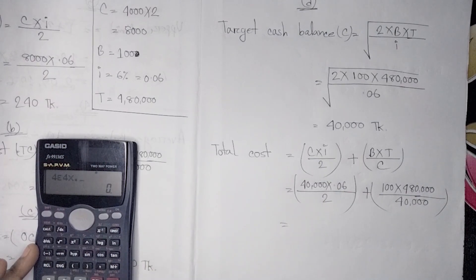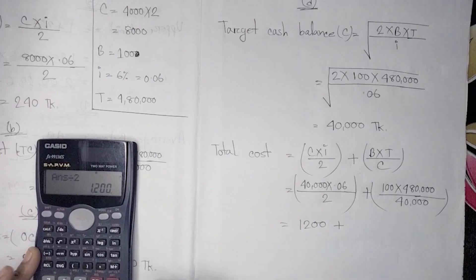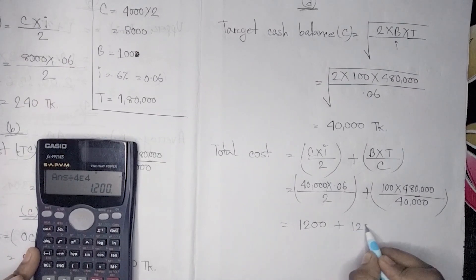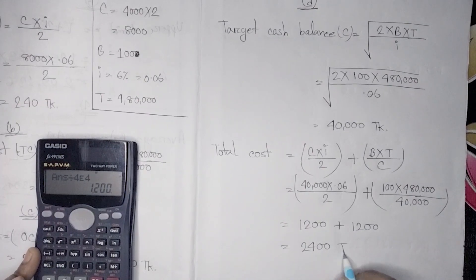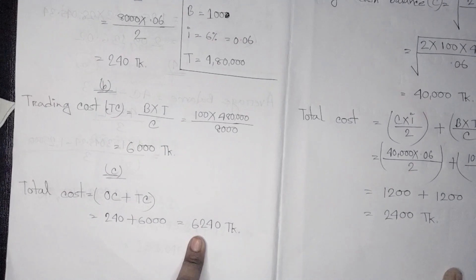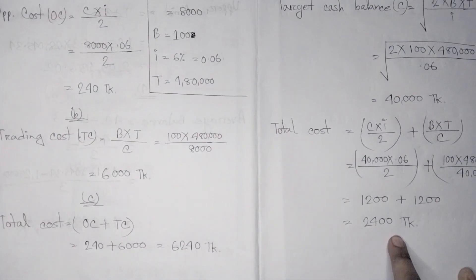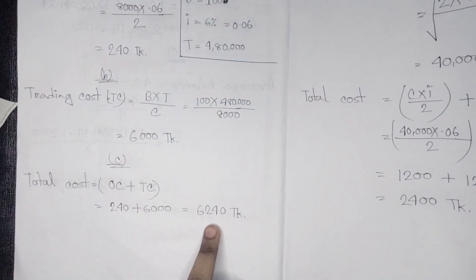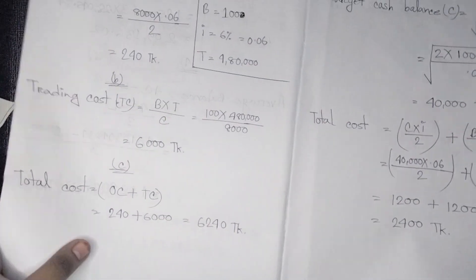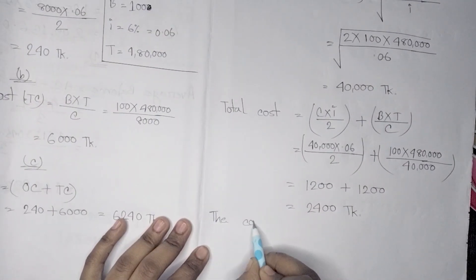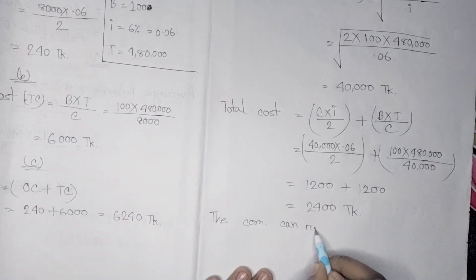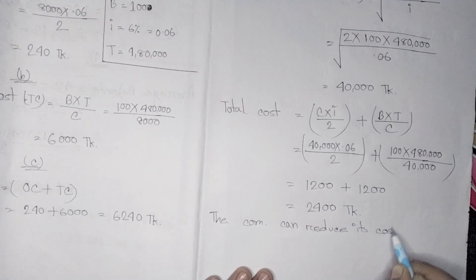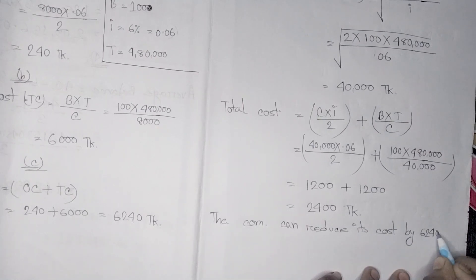So C is 14,000. The total cost comes out to 6,244, and using the target cash balance the total cost is 2,464. The target balance is 8,000 and the total cost is 6,244 at the current balance versus 2,464 at the optimal balance. The company can reduce its cost by 6,244 minus 2,464.